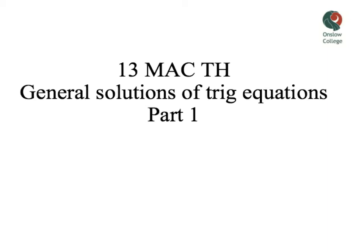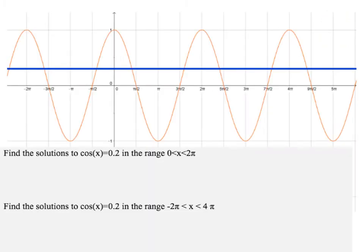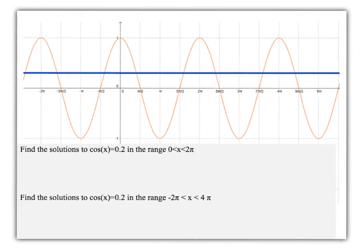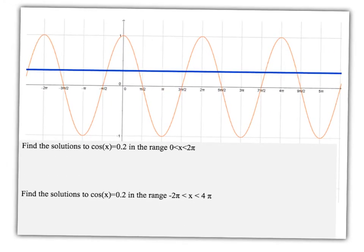Alright, so the first one we're going to look at is a cosine question. And this is like the one we finished in class on Thursday. We're asked here to find the solutions to cos of x equals 0.2. And I'm just going to hop to the second one here. So I'm looking at finding all of the solutions in the range from negative 2π, which is here, out to 4π. So we've got to be really careful about always going back to the range that we're looking for for our x values.